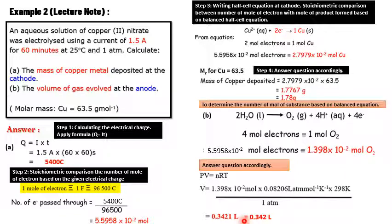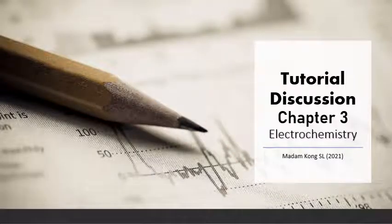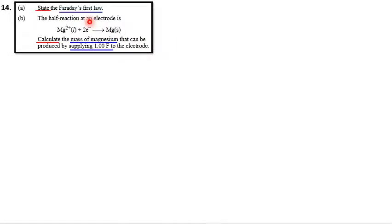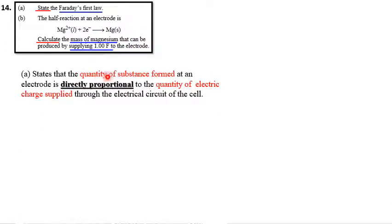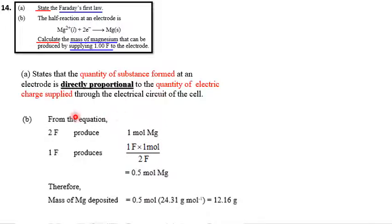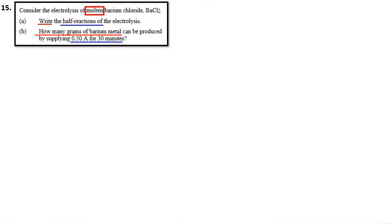Question 14: Define Faraday's First Law — the quantity of substance formed is directly proportional to the quantity of electrical charge supplied through the electrical circuit of the cell. Part (b): Calculate the mass of magnesium produced by supplying 1 faraday. The cathode half-equation shows Mg²⁺ + 2e⁻ → Mg; 2 faraday produces 1 mol Mg, so 1 faraday produces 0.5 mol Mg. Mass = 0.5 × 24.31 = 12.16 g of magnesium.